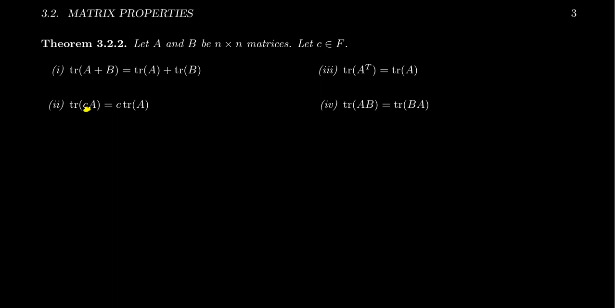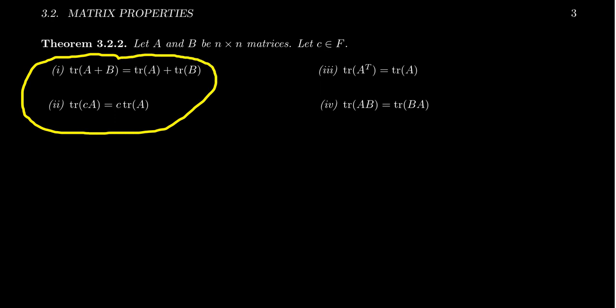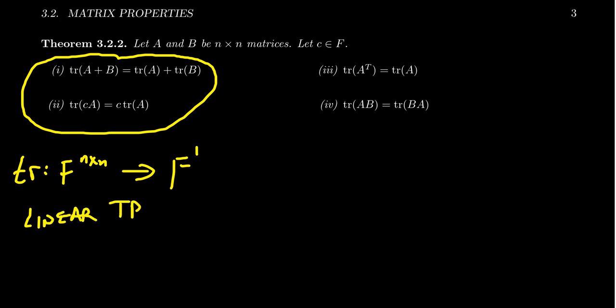If you take the trace of C times A, you multiply every entry by C, including the diagonal entries. Factoring out C from the sum of diagonals leaves the trace of A, so trace(CA) equals C times trace(A) — scalar multiplication is preserved by the trace. Properties one and two tell us the trace is a linear transformation from F^(n×n) — an n-squared dimensional vector space — down to the field, a one-dimensional vector space.